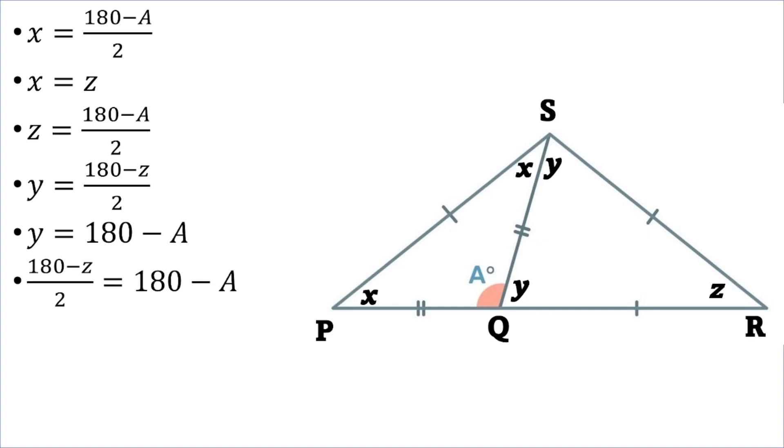Transposing, 2 times 180 minus A will give us 360 minus 2A. And then, transposing and simplifying, we'll have that 2A is equal to 180 plus Z, which could also be expressed as Z is equal to 2A minus 180.